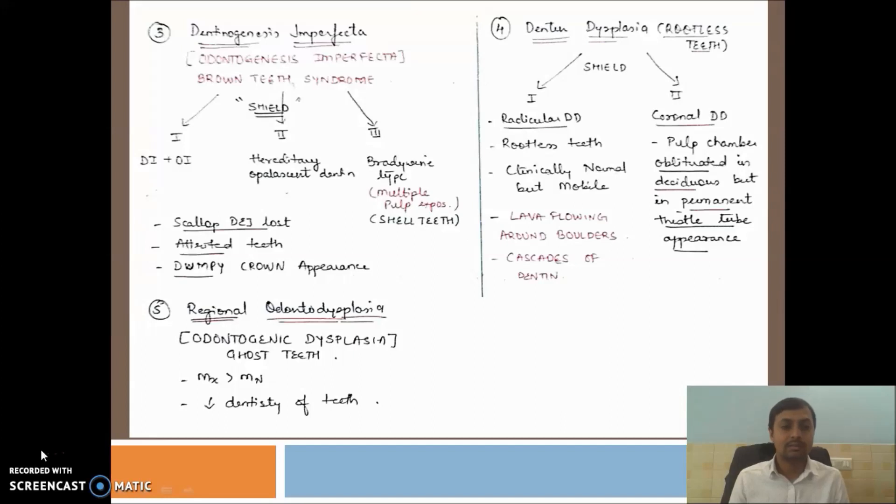What is coronal dentin dysplasia? In that, the pulp chamber will be large. It looks like a thistle tube appearance.